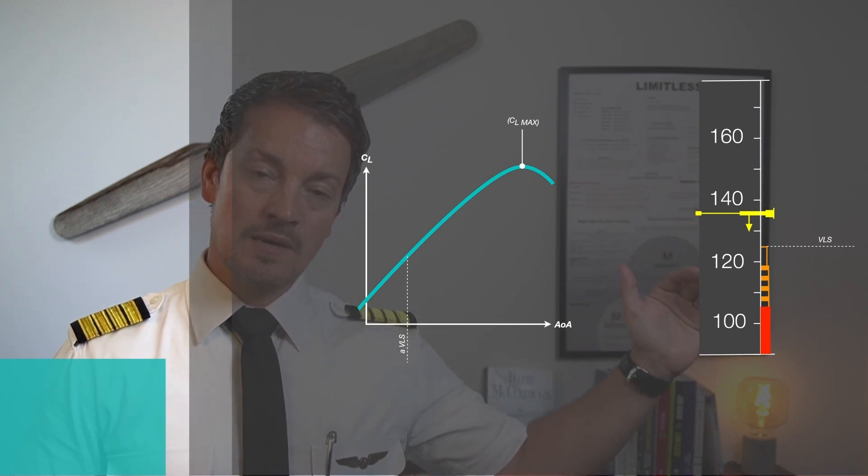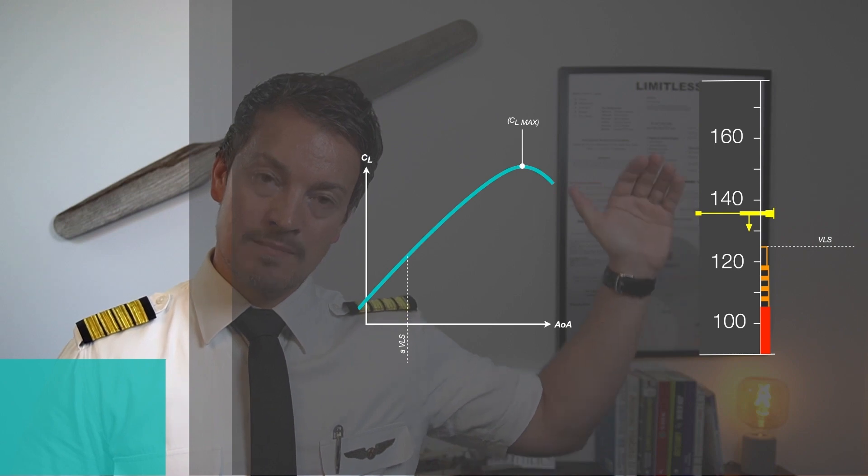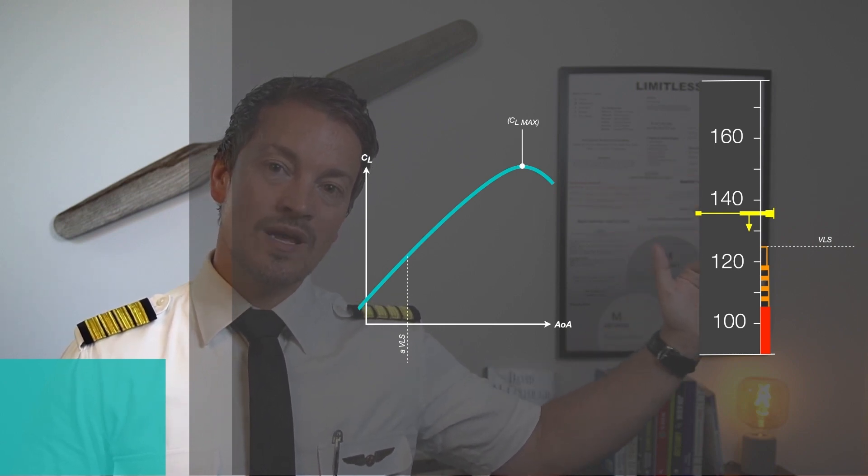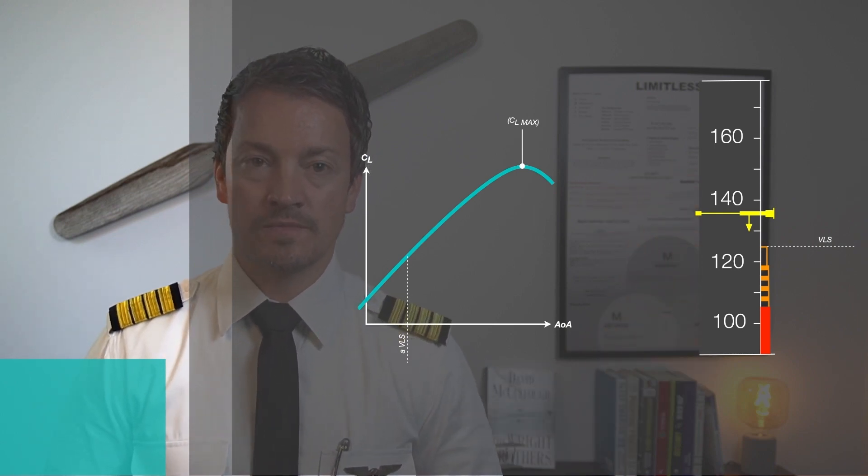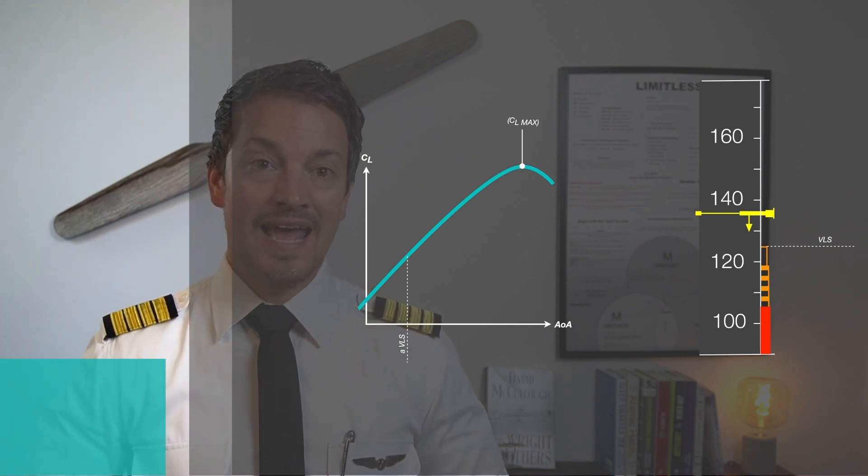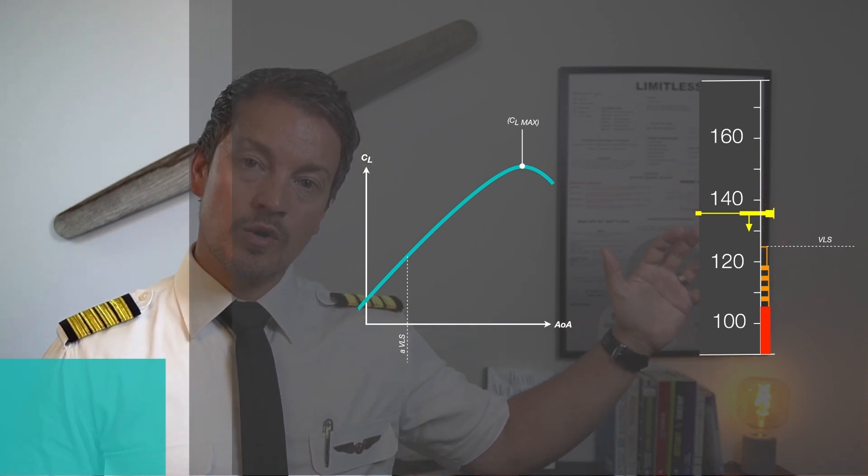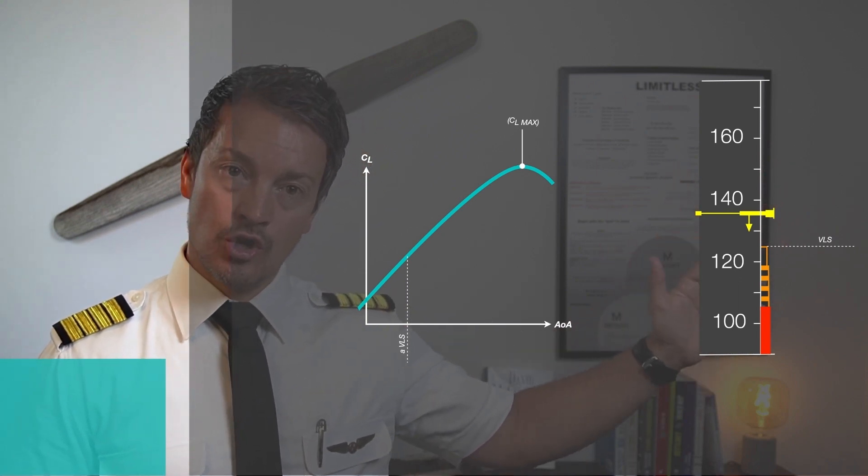which computes the speed tape, continuously calculates the minimum speed, the maximum speed, as well as the low speed protection. So, in order for us to understand the angle of attack protection, we will be taking a look at the speed tape with the indication for normal law.